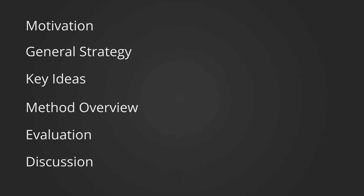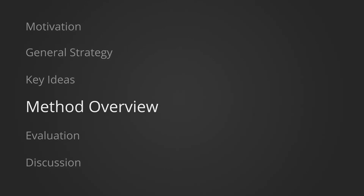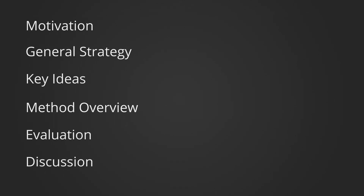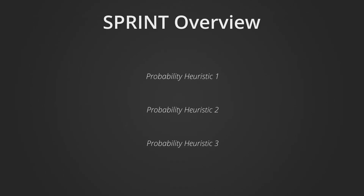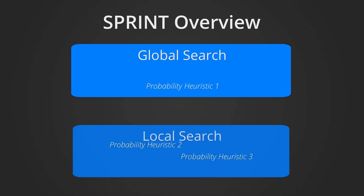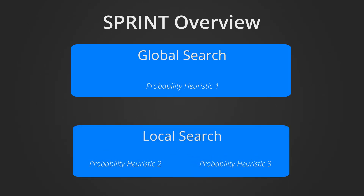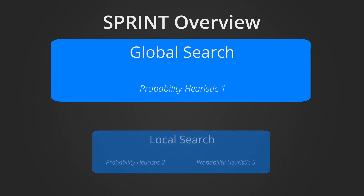We'll now overview our method, particularly highlighting our probability heuristic functions. SPRINT uses three probability heuristics to encourage the overall search to seek out regions with a higher chance of yielding useful samples. These probability heuristics are subcomponents of newly proposed global and local tree searches. We'll explain these global and local searches and highlight how the probability heuristics fit into them, starting with the global search.